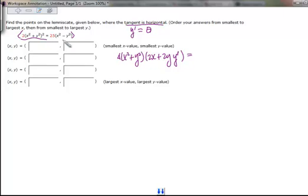And on the right-hand side, we have 25 times 2x minus 2y times y prime.